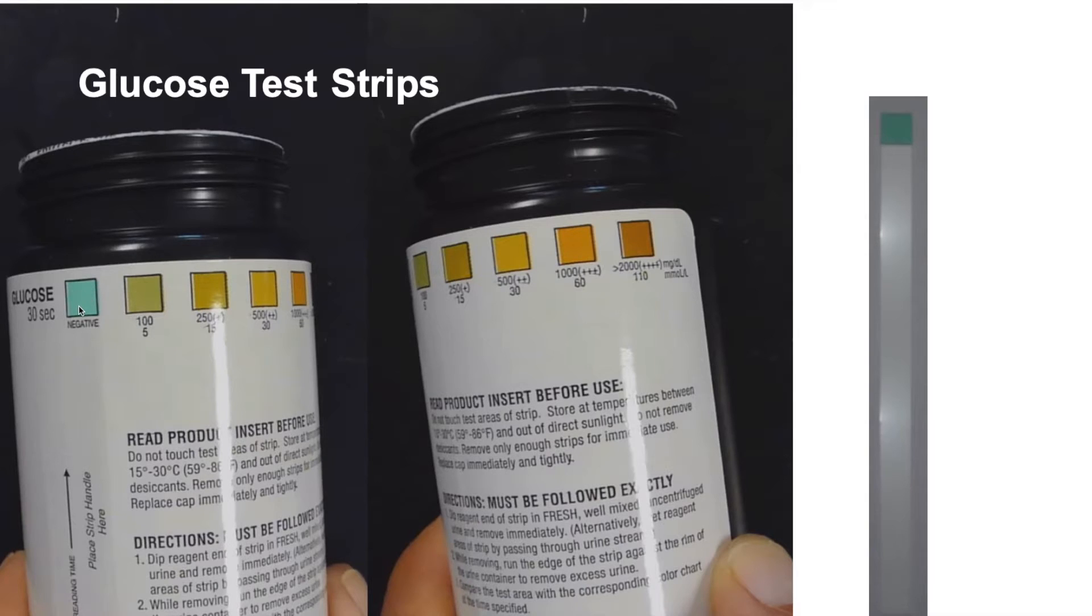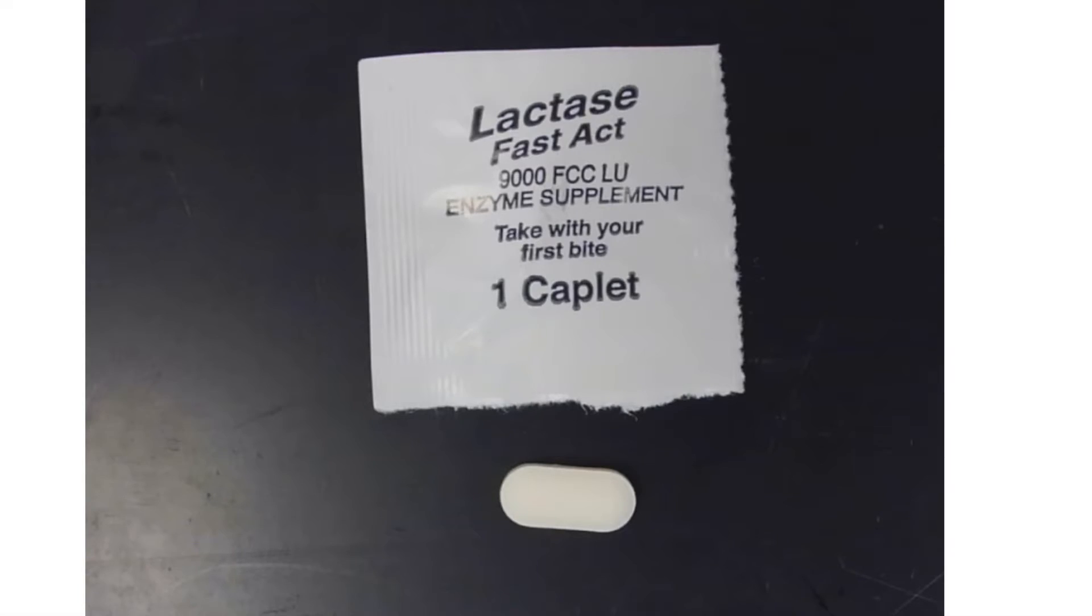It is going to remain that color if glucose is absent, but it's going to change to a darker color if it's positive for glucose. And it has values. The values are milligrams per deciliter, milligrams of glucose, that is.